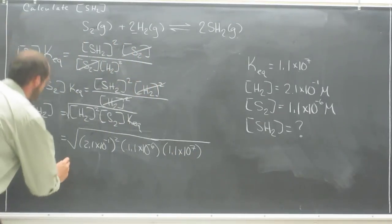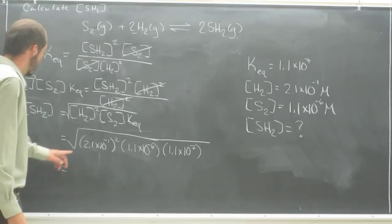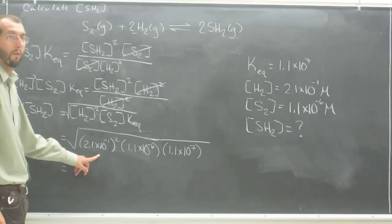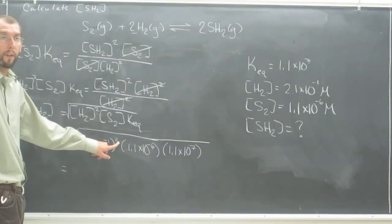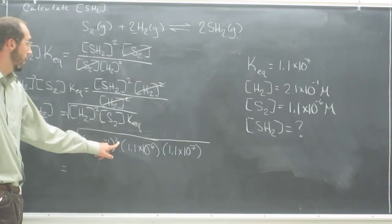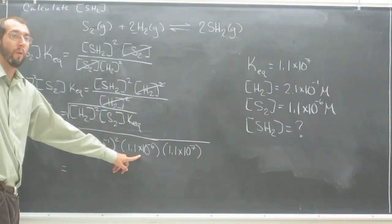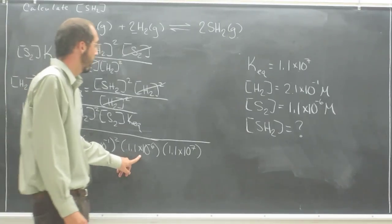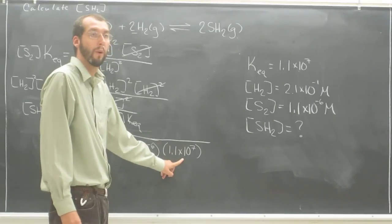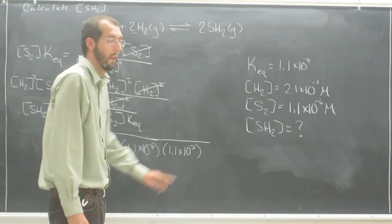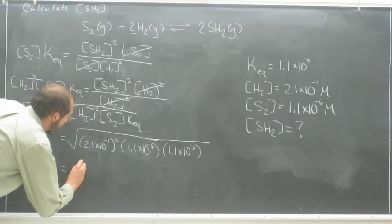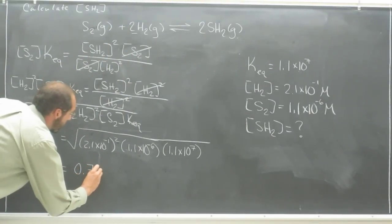And the order of operations you want to do this in is you're going to want to take 2.1 times 10 to the negative 1, square that first. Then you're going to want to multiply that by 1.1 times 10 to the negative 6. Then you're going to want to multiply that times 1.1 times 10 to the 7th. And when you do all of that, you're going to get this number, 0.73.